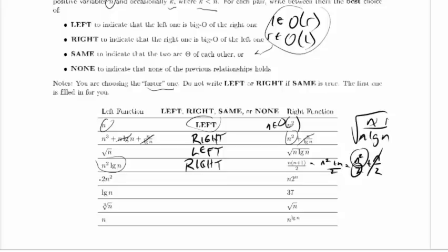2n squared and n times 2 to the n. n times 2 to the n, 2 to the n grows enormously quickly, faster than any polynomial. This is just a constant coefficient, so we're really just looking at the polynomial n squared here. And this factor of n makes it grow even faster, but it's not even necessary. Still, the left hand side here is much faster than the right hand side.